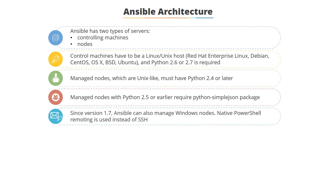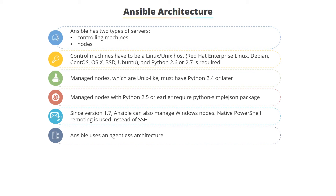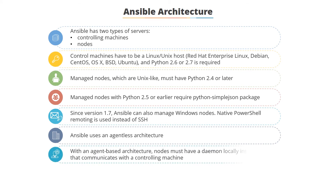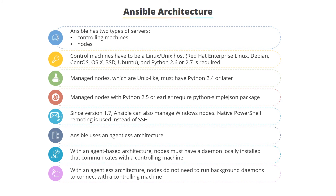Since version 1.7 of Ansible, you can also manage various Windows nodes. In this case, PowerShell remoting is used instead of SSH, which is used for Linux. Ansible uses an agentless architecture. With agent-based architectures, nodes must run background processes as daemons installed locally that continuously communicate with a controlling machine. In an agentless architecture, nodes do not need to run as background daemons all the time to connect with a controlling machine.